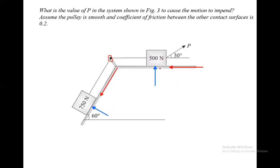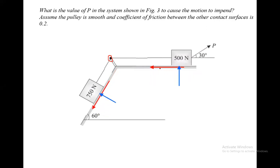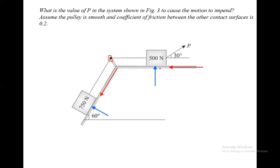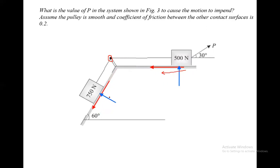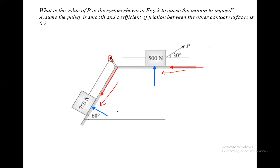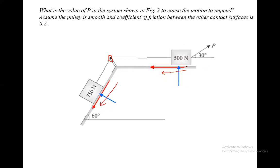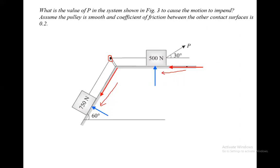As you pull, the 500 Newton block moves right and the 750 Newton block moves up the plane. Both blocks move right and up the plane, so friction forces act towards the left on the horizontal block and downward along the plane on the inclined block. Normal reactions act upwards at both contact surfaces.